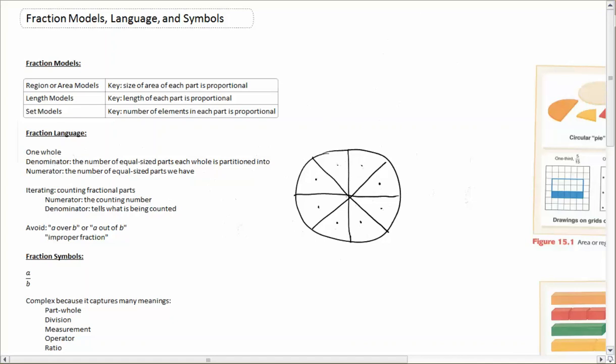Going through that counting with them, now we're no longer counting whole numbers, we're counting fractional parts. And to hear over and over again, hey, the numerator, the one on top, that's telling us the counting number. The denominator is telling us what's being counted. It's telling us the size of those parts that we're counting every time. So this iterating can help kids learn the language and learn the meaning behind the language.